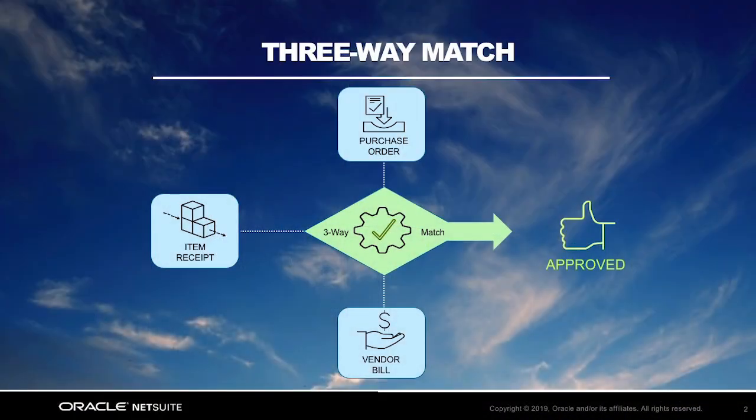NetSuite was designed as an integrated suite capable of running all of your business processes. From a purchasing standpoint, all three transactions — purchase order, item receipt, and vendor bill — are matched together automatically within the NetSuite system, saving your business time and money by eliminating the need to manually check for vendor bill discrepancies throughout the period.